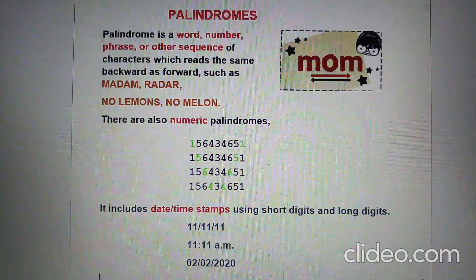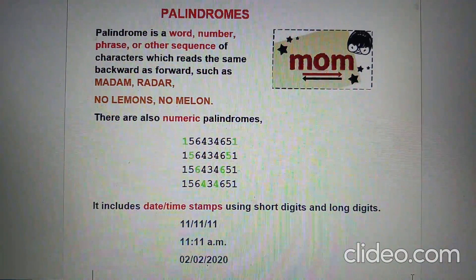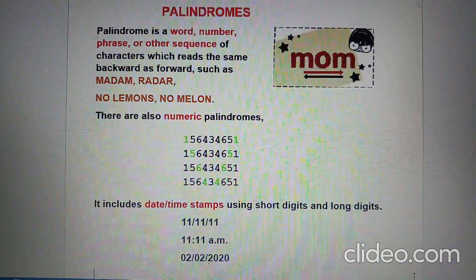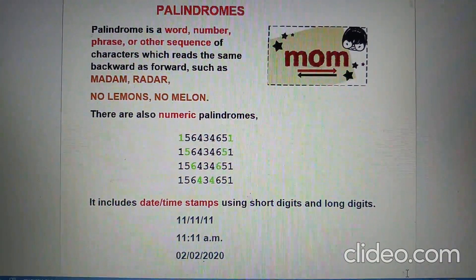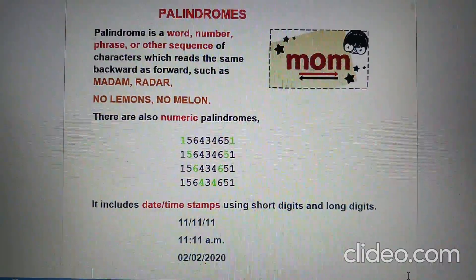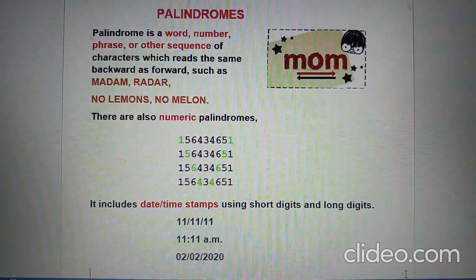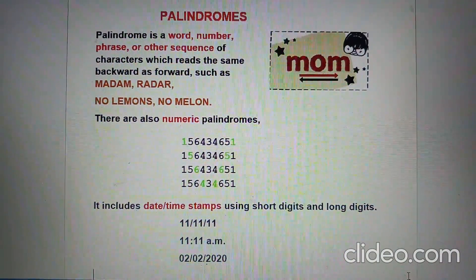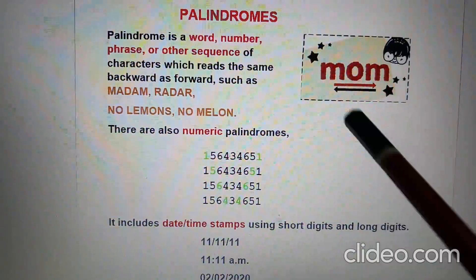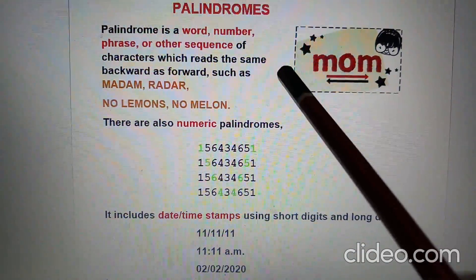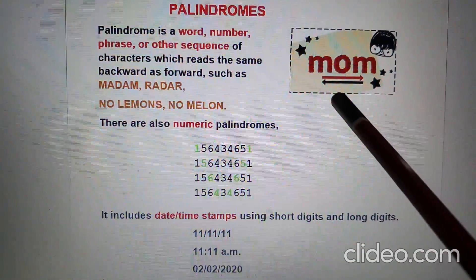Hello children, today we are going to learn what are palindromes. A palindrome is a word, number, phrase, or other sequence of characters which reads the same backward as forward. Means, usko forward read karein ya backward read karein, wo word same hi bane.